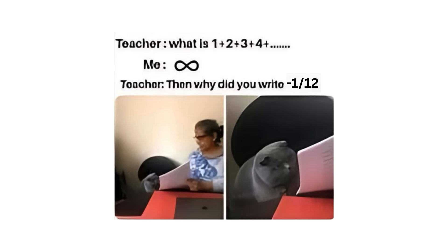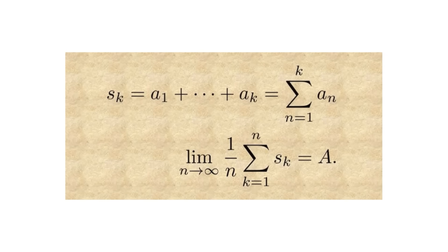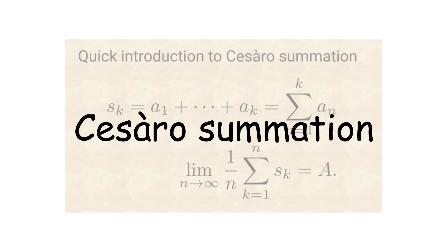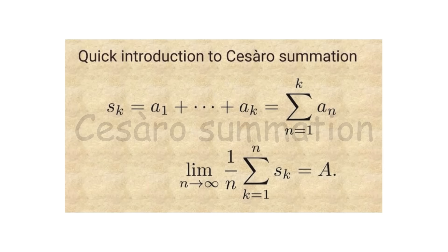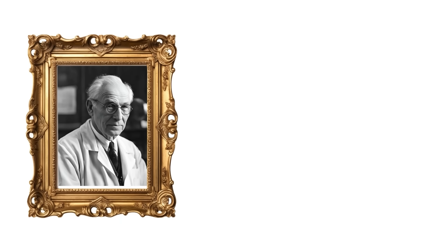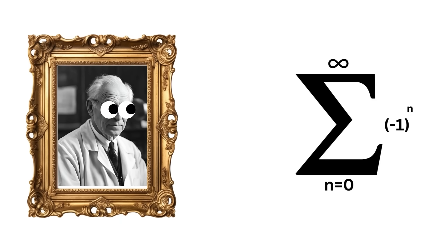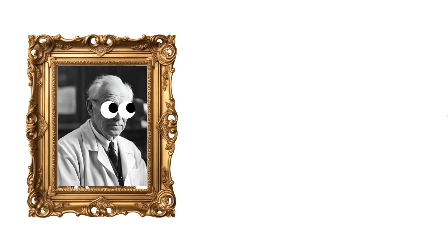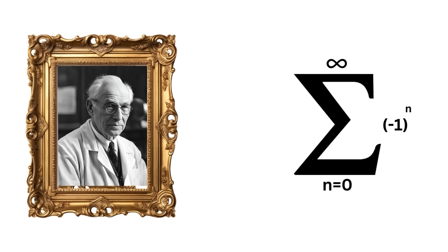However, certain methods can be used to assign these series a meaningful value. For instance, you can take the averages of the results as you go along, known as Cesaro summation, which gives a value of one half. Thompson had heard of Grandi's series being given this value, but his thought experiment did not allow the possibility of the lamp being half on. Thus, he rejected that Grandi's series and his thought experiment had any direct relation.